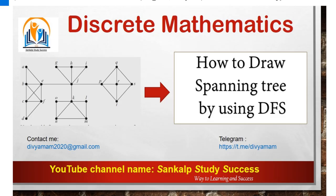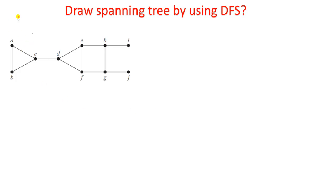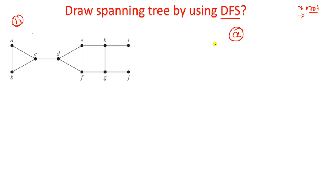In the previous session I gave this as homework, so please watch this video to check whether it is correct or not. This is our first question. In the first question, A should be the root node. What is the criteria and procedure for DFS? First we have to choose the root node, then we have to visit the next vertex - we have to explore the root node and take only one vertex, not all the incident vertices. That is DFS. Here A is our root node.